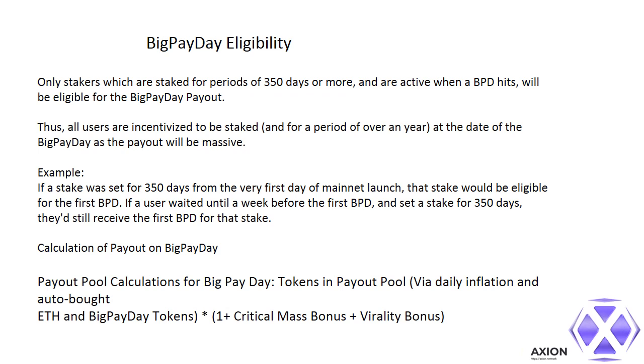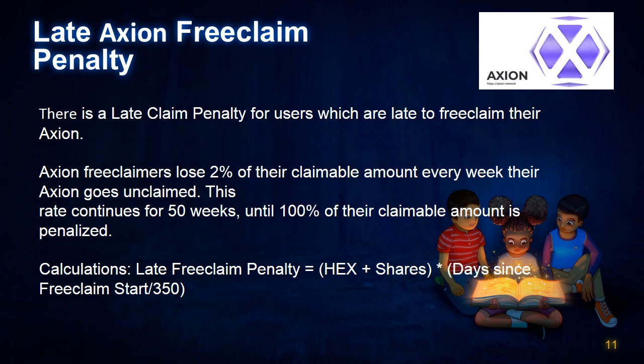Calculation of payout on Big Pay Day: Payout pool calculations for Big Pay Day include tokens in payout pool via daily inflation and auto-bought ETH, and Big Pay Day tokens multiplied by (1 + critical mass bonus + virality bonus). Late Axion free claim penalty: Axion free claimers lose 2% of their claimable amount every week their Axion goes unclaimed. This rate continues for 50 weeks, until 100% of their claimable amount is penalized. Late free claim penalty equals HEX shares multiplied by (days since free claim start divided by 350).